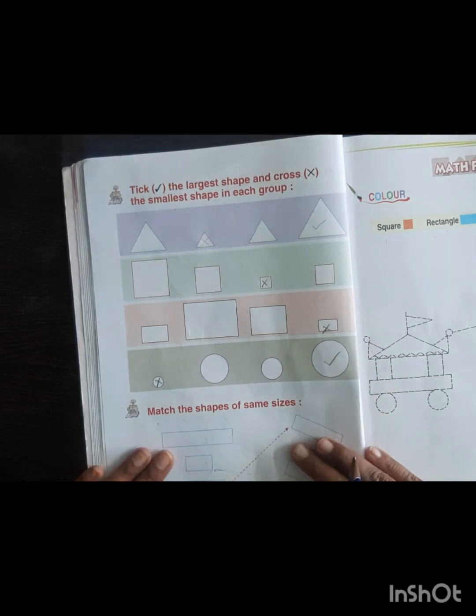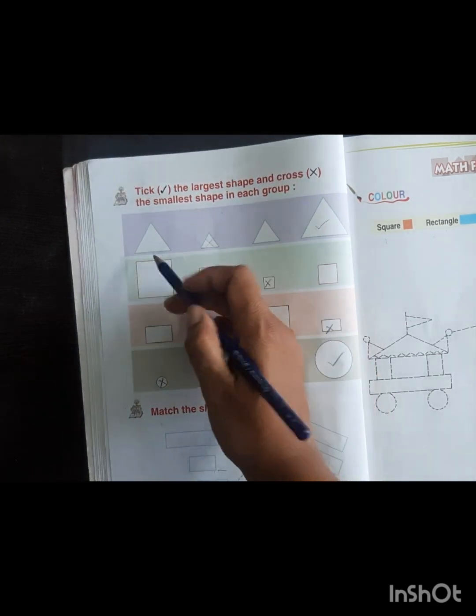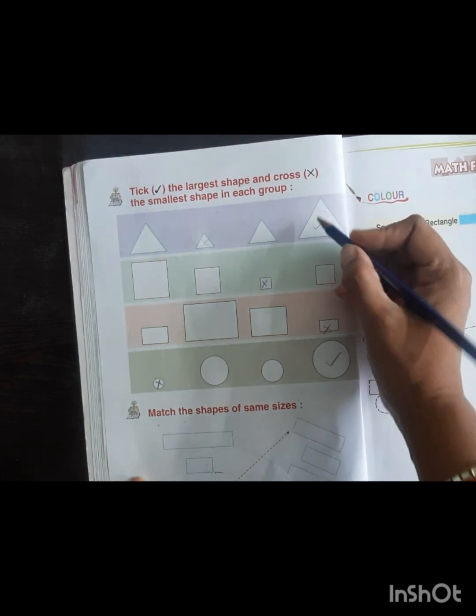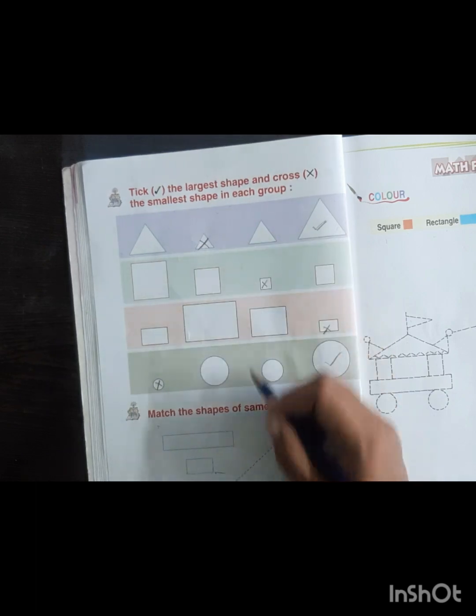Tick the largest shape and cross the smallest shape in each group. Here we have four triangles. The largest triangle, we have to tick it, and the smallest one, we have to cross it.